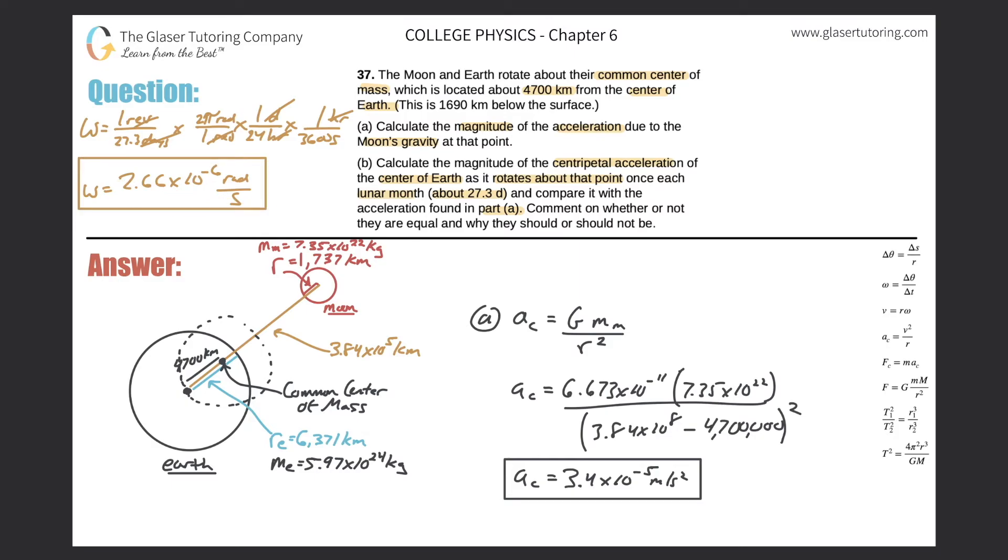So it's two pi divided by 27.3 times 24 times 3,600. And it works out to be a value of about 2.66 times 10 to the minus six. And that is in radians per second. Now those are the right units for angular velocity. So now where can I go from here? Well, remember the whole goal is to try to figure out centripetal acceleration. So here it is in my formula. Centripetal acceleration I can find by finding the linear speed squared over R.